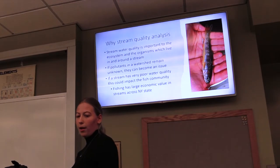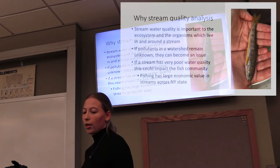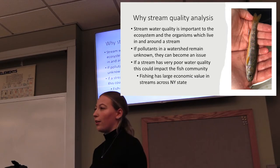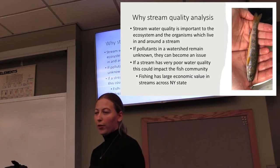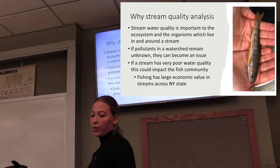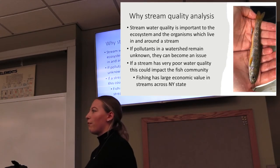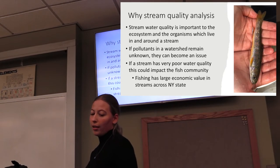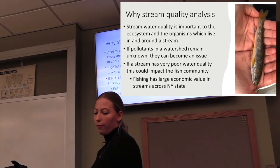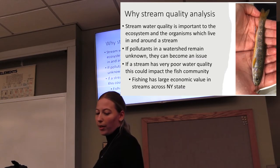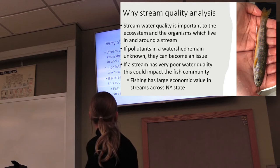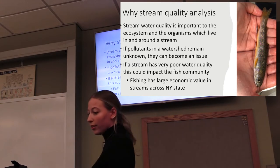Just a little background on stream water quality: stream water quality is important to the ecosystem and all the organisms which live in and around the stream. If there are pollutants in a stream and we don't know about them, they could become a big issue. If the stream has poor enough water quality, it could impact the fish communities and everything else living there, and that would have economic value because fishing in these streams is very popular. There is a picture of one of the brook trout we found in the stream.